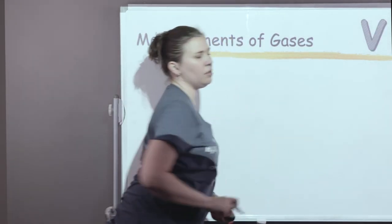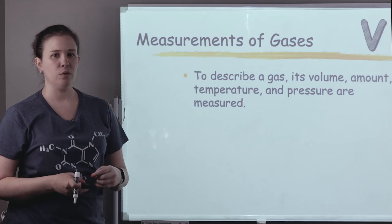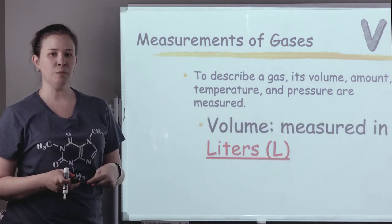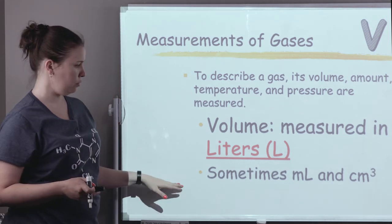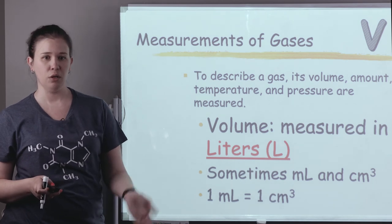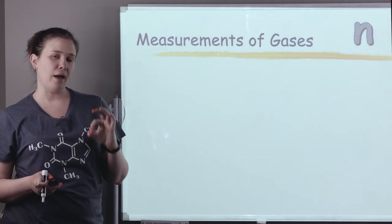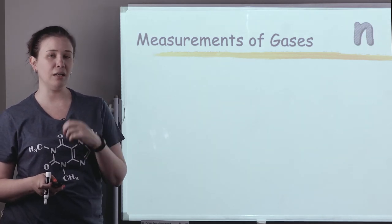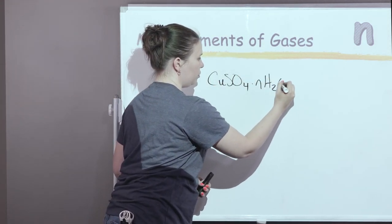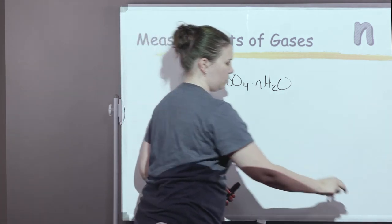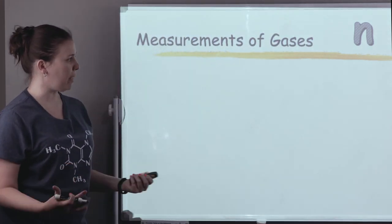Let's talk about the specific variables we're going to be working with in gas laws. The first, V, stands for volume, or the amount of space something takes up. Volume is typically measured in liters, although you may also see it in milliliters or centimeters. By the way, a milliliter and a cubic centimeter are actually equal to each other — one milliliter equals one cubic centimeter, or one cc. Next, we might have the letter N. N is the variable for moles, or the generic amount of substance.